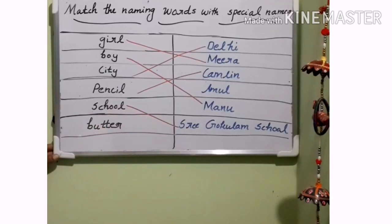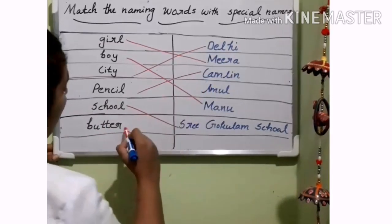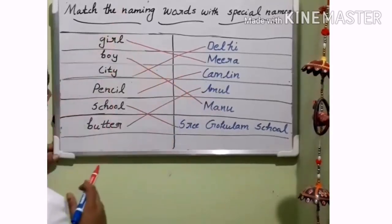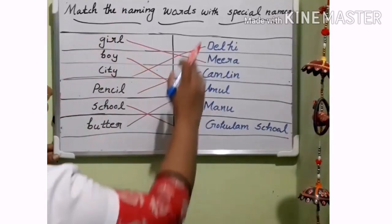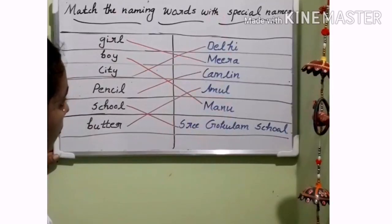And butter. Commonly we are using the butter Amul. That is Amul. So here they are given the nouns, and here they are given their special names.